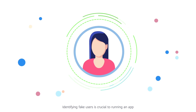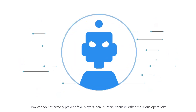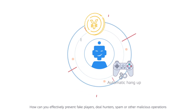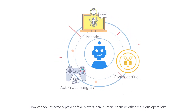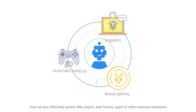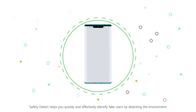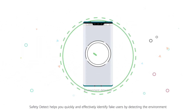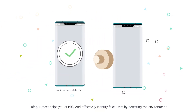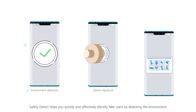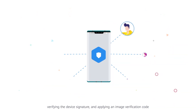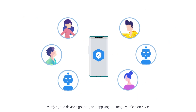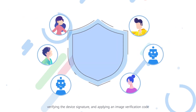Identifying fake users is crucial to running an app. How can you effectively prevent fake players, deal hunters, spam, or other malicious operations? Safety Detect helps you quickly and effectively identify fake users by detecting the environment, verifying the device signature, and applying an image verification code.